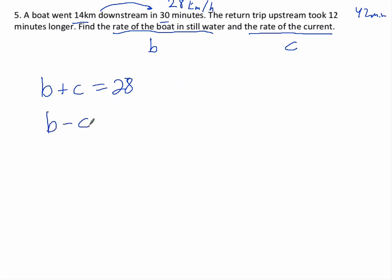Okay, upstream is going to be b minus c because you're going against the current, right? And it took 42 minutes. So what's the rate there? The distance is 14 kilometers per 42 minutes, right?